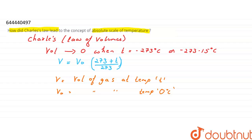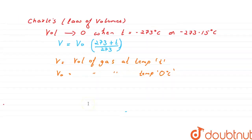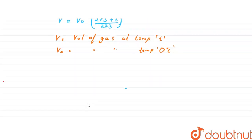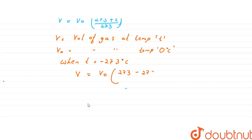Now, what happens when temperature reaches minus 273 degrees Celsius? Substituting t equal to minus 273 degrees Celsius into the expression: V equals V-naught times (273 plus (minus 273)) divided by 273. Since 273 minus 273 equals 0, the expression becomes 0, so V is approaching zero.